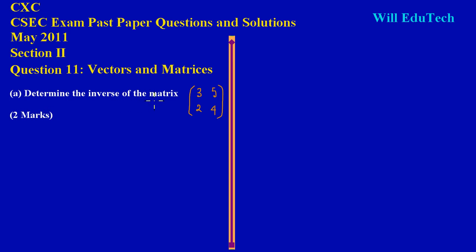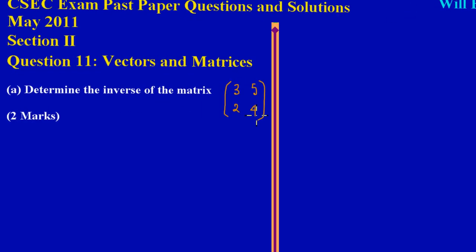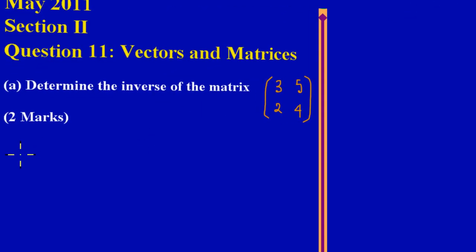Now just a quick recap on matrices. Let's say we had the matrix Z and the matrix Z is equal to [a b; c d]. If you're asked to find the inverse of this matrix, the first thing you'd want to find is the determinant of Z.